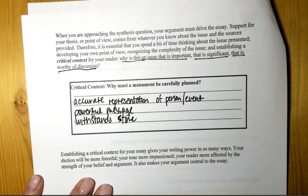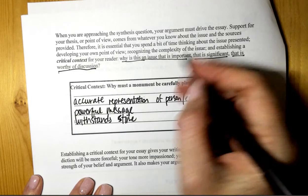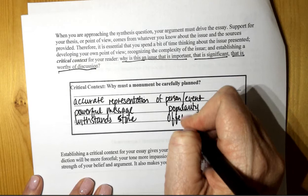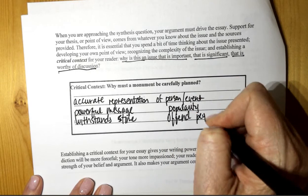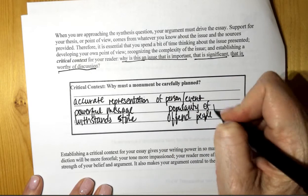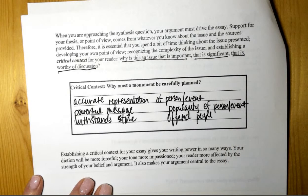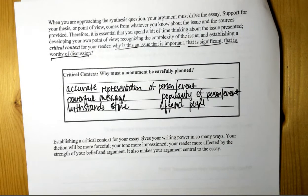Why else? What else must you consider? Yeah, the popularity. Okay, offend anybody. So popularity of the person or the event. So yeah, I mean, you can't really have a monument for someone or something that nobody really understands or knows about, right?